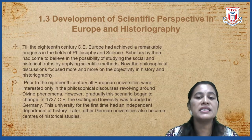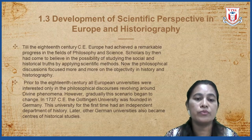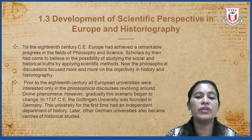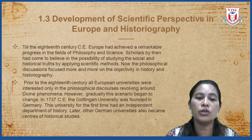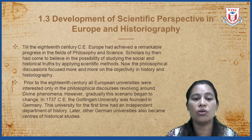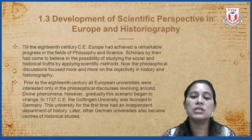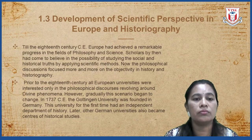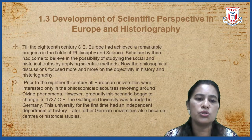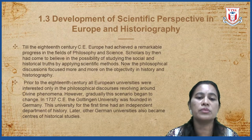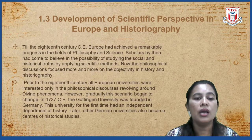So children, as there was progress and as they moved ahead, there were remarkable advances in science as well. The scholars by the eighteenth century had come to believe that there is a possibility of studying the social and historical truth by applying scientific methods. Now the philosophical discussions focused more on the objectivity in history and historiography. Prior to the eighteenth century, all European universities were interested only in the philosophical discourses revolving around divine phenomena — it was more focused on God or the superpower sort of thing.